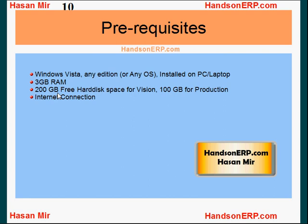What is vision and what is production? When you install Oracle, you have the option of doing a vision install. Vision install means Oracle is installed with a company called Vision Operations, which has volunteered to let Oracle distribute its implementation with the installation. People who want to learn and explore a company that is already implemented within the software can choose vision installation. However, the way I teach, I really suggest you go with a fresh installation - meaning when you start Oracle there won't be any company already implemented, and you implement your own company from scratch using my tutorials.